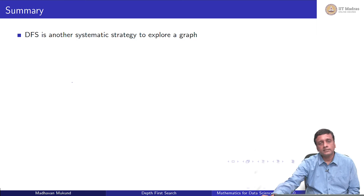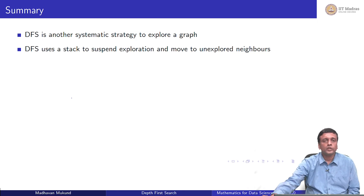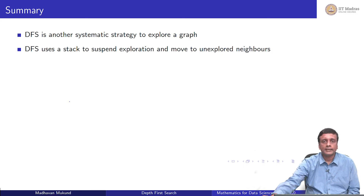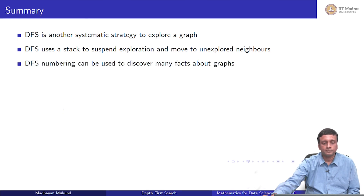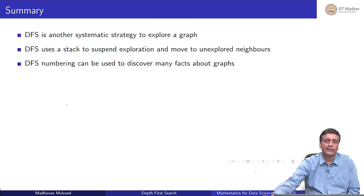To summarize: DFS is a different systematic strategy from BFS to explore a graph. We start with a vertex, suspend it, go to an unvisited neighbor, suspend it, and so on. To keep track of suspended vertices and resume them systematically, we use a stack — a last-in first-out data structure. If we keep track of when we enter and finish each vertex, we get DFS numbering. With DFS numbering, we can uncover structural properties of graphs, such as cut vertices and bridges, which are quite interesting.